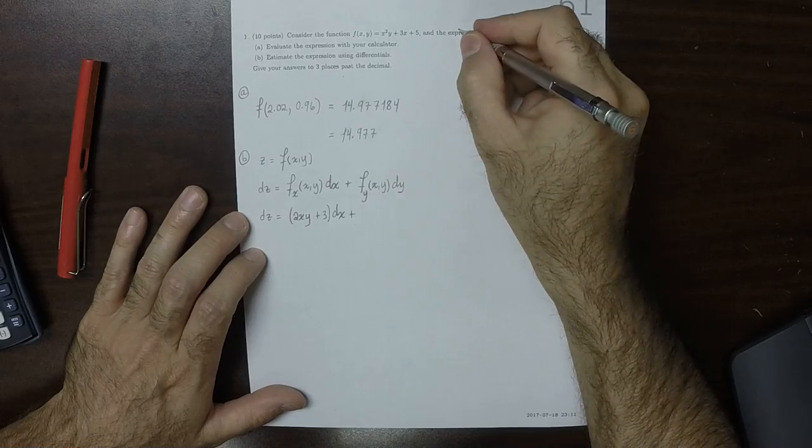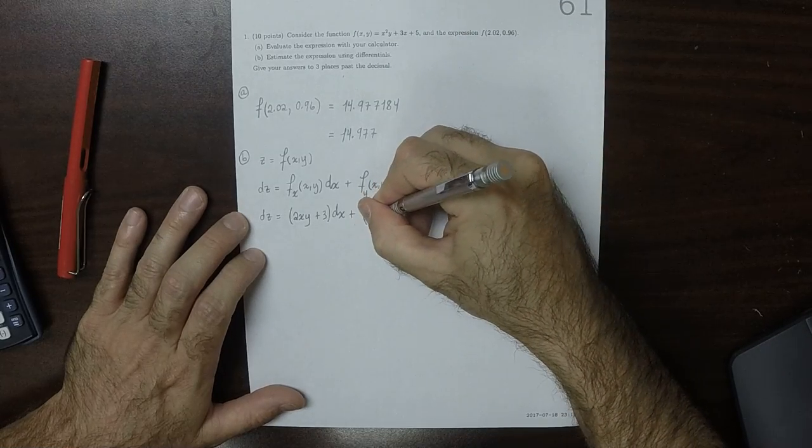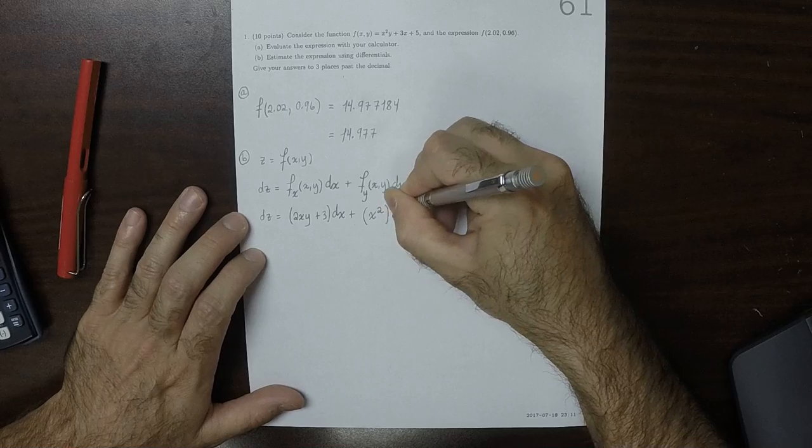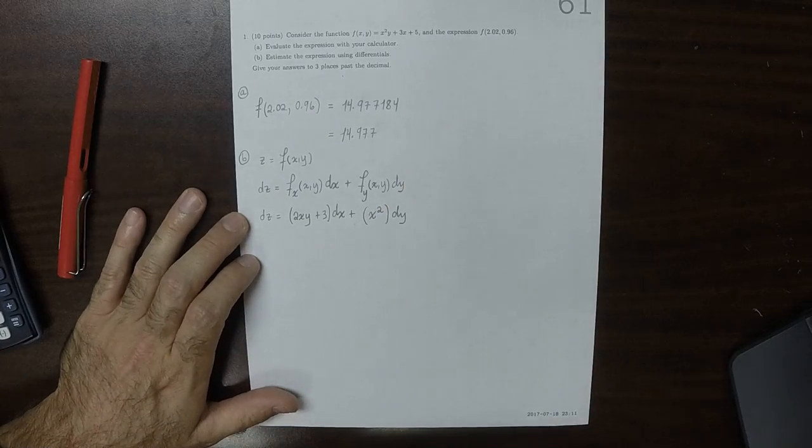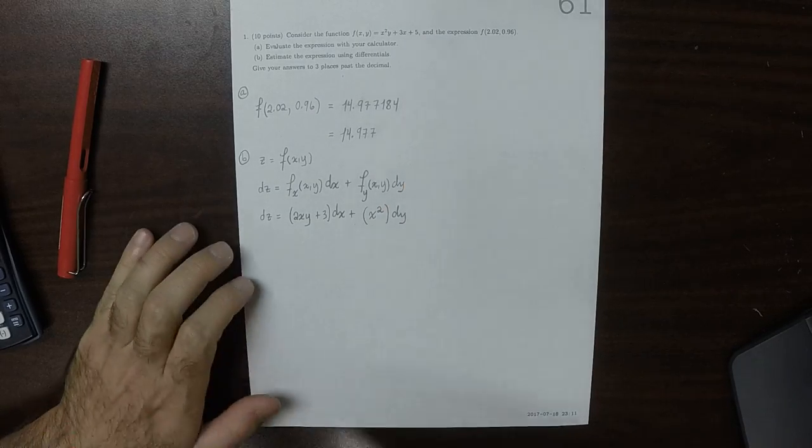And then plus now the y partial. So that'd be x squared, and then dy. So that's the z partial.